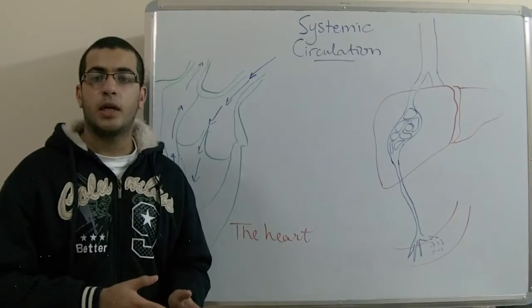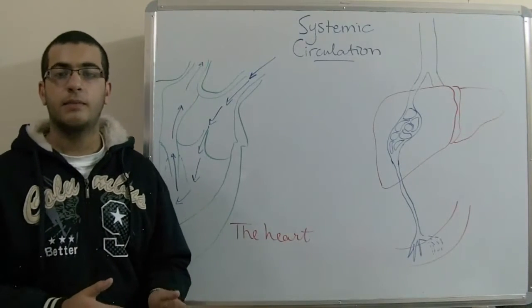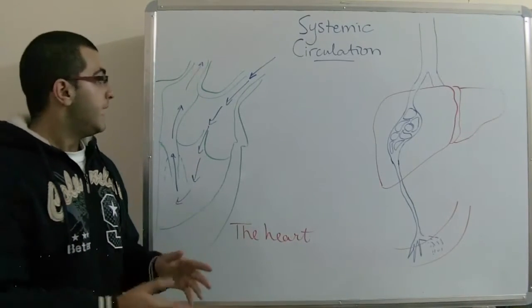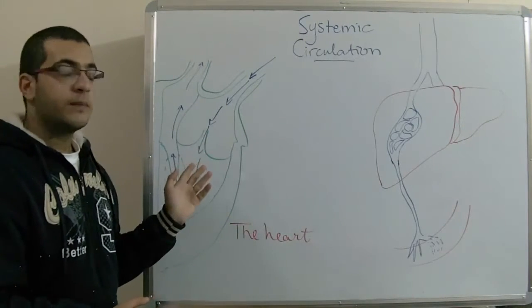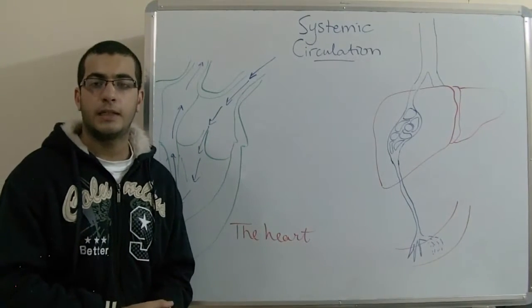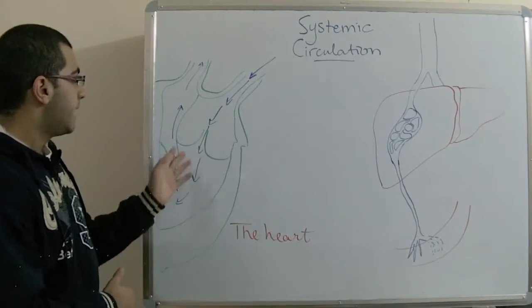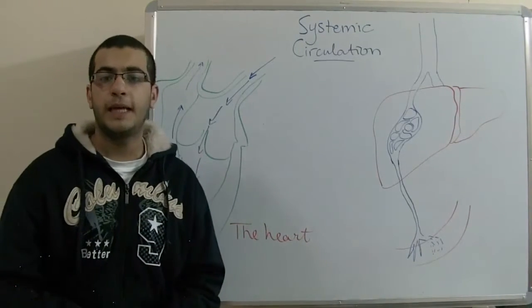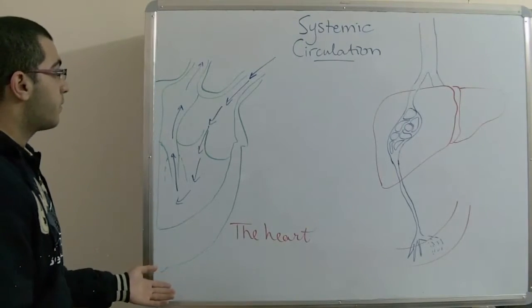On the other hand, the carbon dioxide or the catabolic waste which results from burning fats and sugar is carried by the blood instead of oxygen, and it returns once more through the inferior and the superior vena cava to pour their contents inside the right atrium to begin the pulmonary circulation once more. This is our first part.